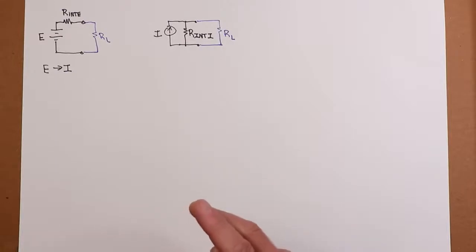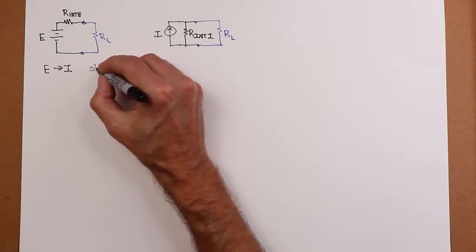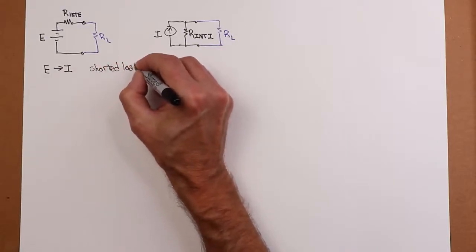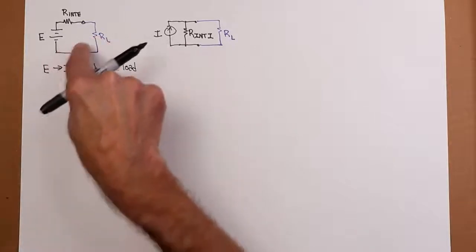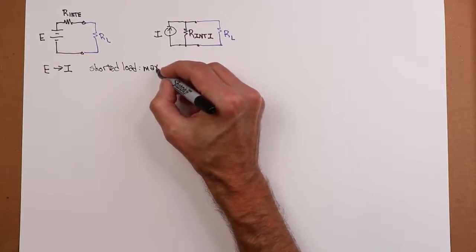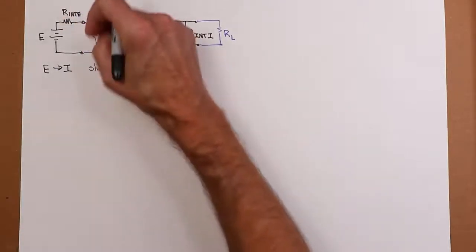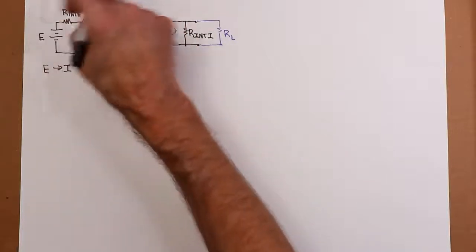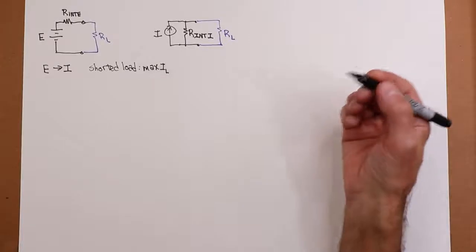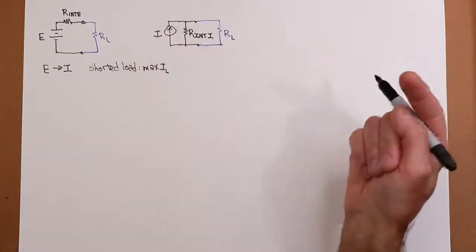So let's take a look at those extremes. Short the load. What do we wind up with in the original circuit? Well, that gives us the maximum current, right? That gives us maximum I load. And what would that be? Well, if this is shorted, E drops across R internal. So it wouldn't make any sense to have this source current be any larger than that. Because when this shorts out, all of this current is going to go through the load, take the path of least resistance.